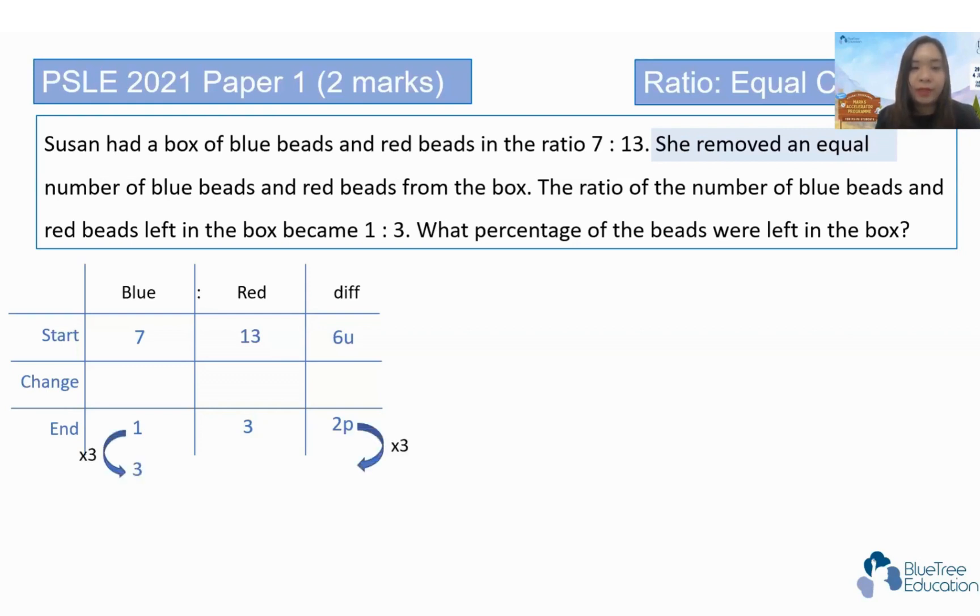All right, see the blue and the red, the difference is 6 units and the leftover is 2 parts, right? Now, I put parts here because this is not my final units. Therefore, I use it to differentiate out. Now, if I were to put the 2 parts into 6 units, convert to 6 units, I can see now my difference is the same, and therefore in between my change is equal units, 4 units.